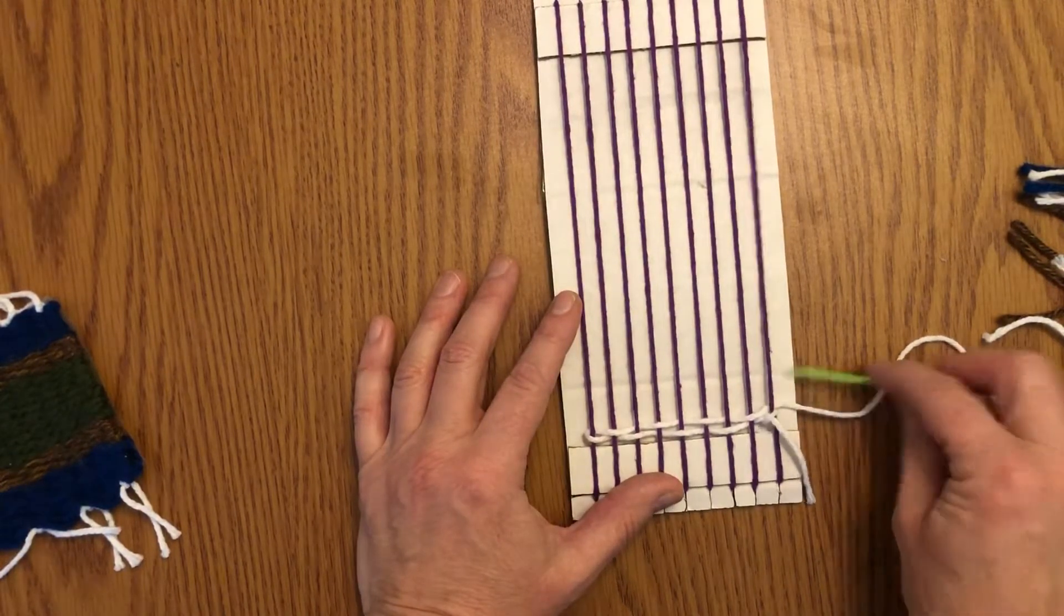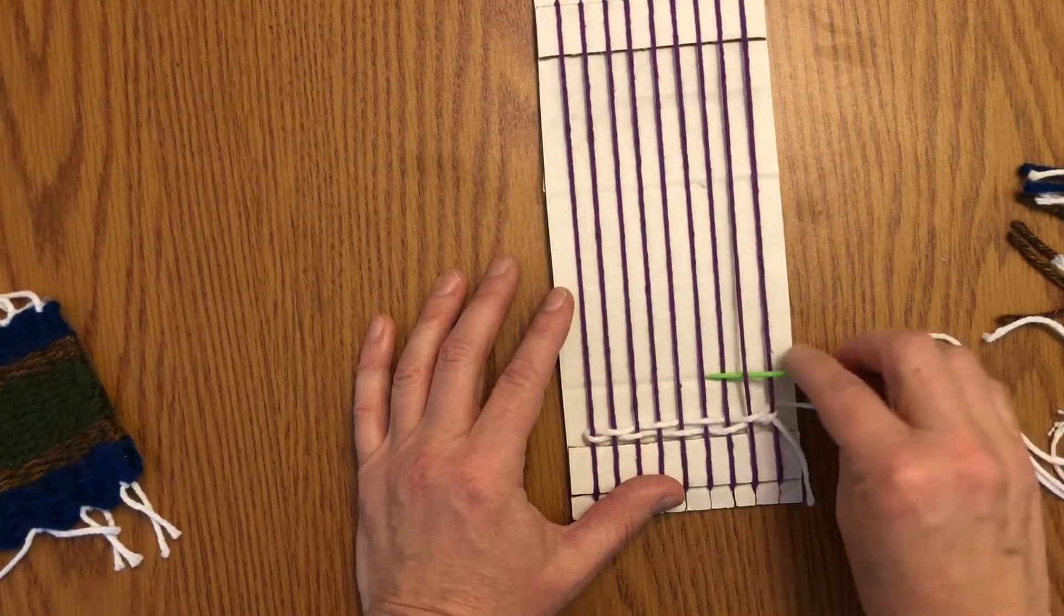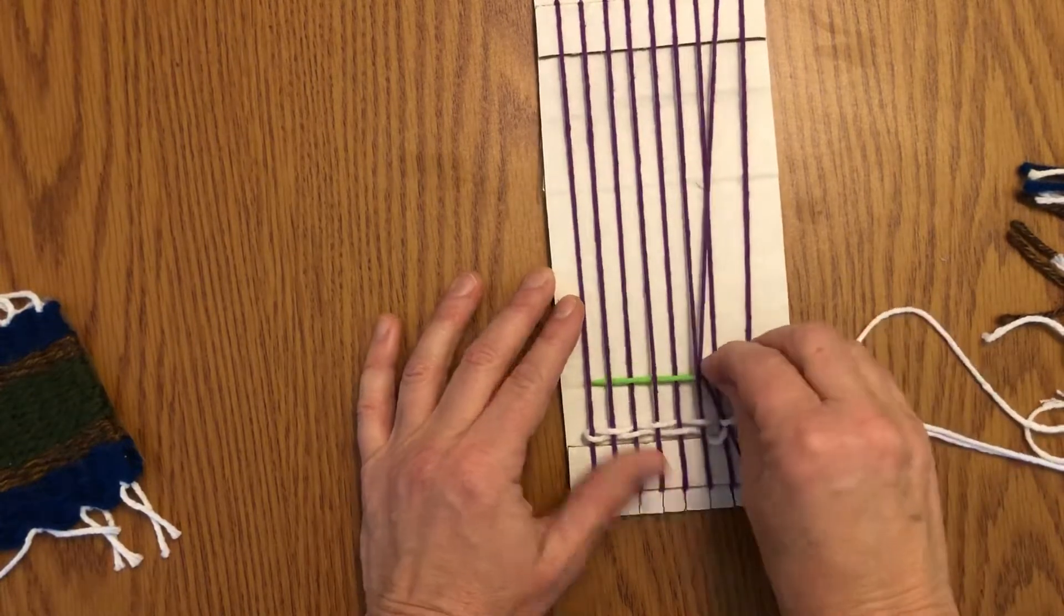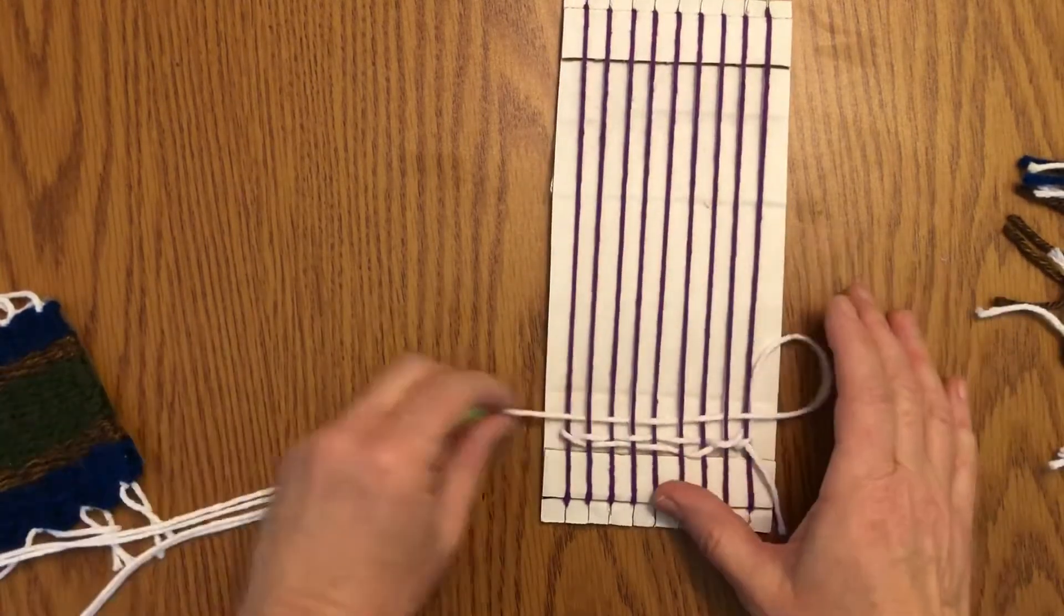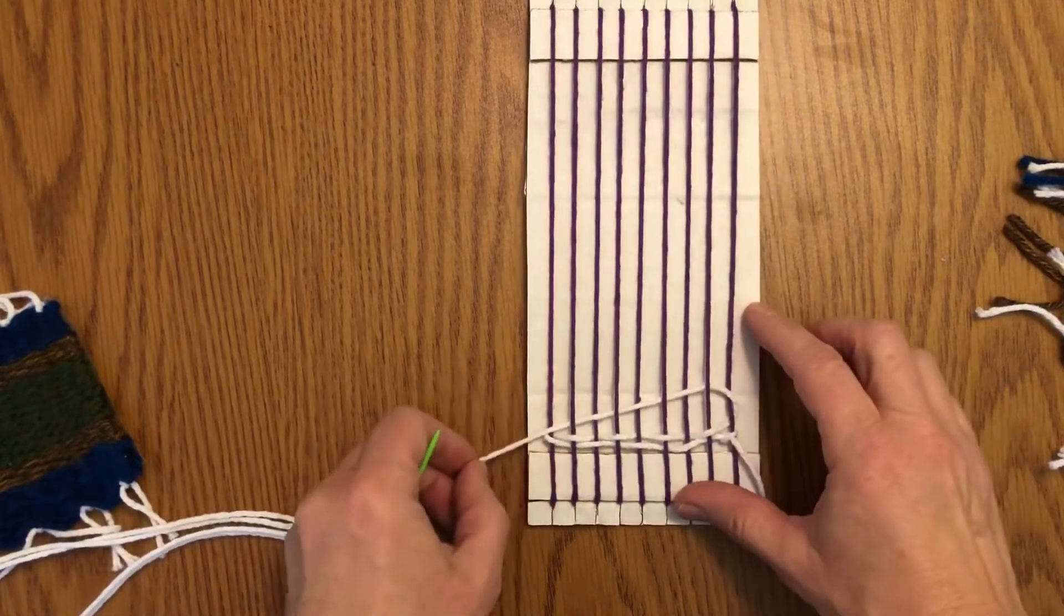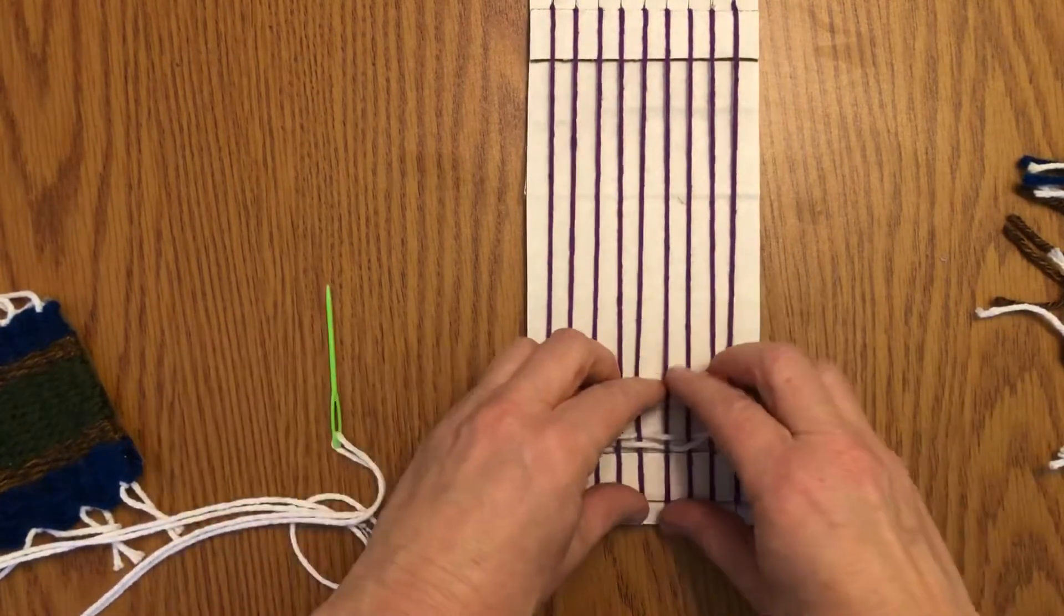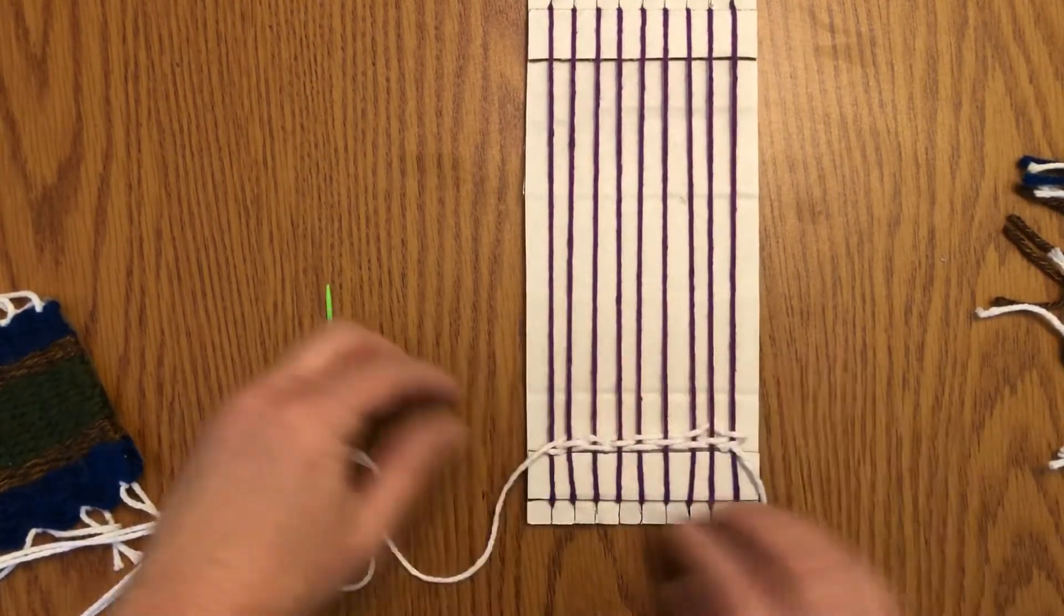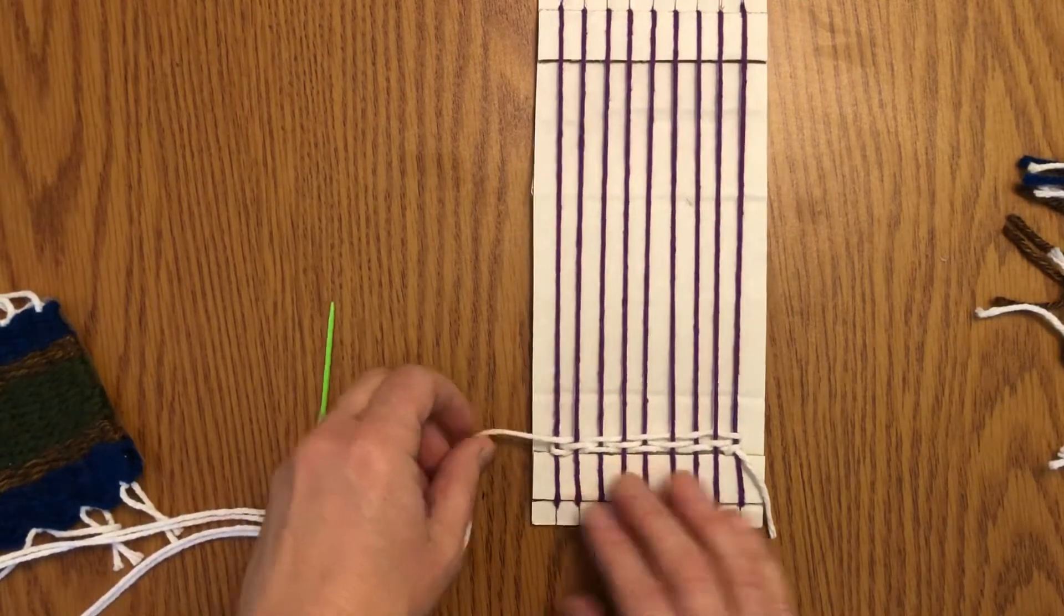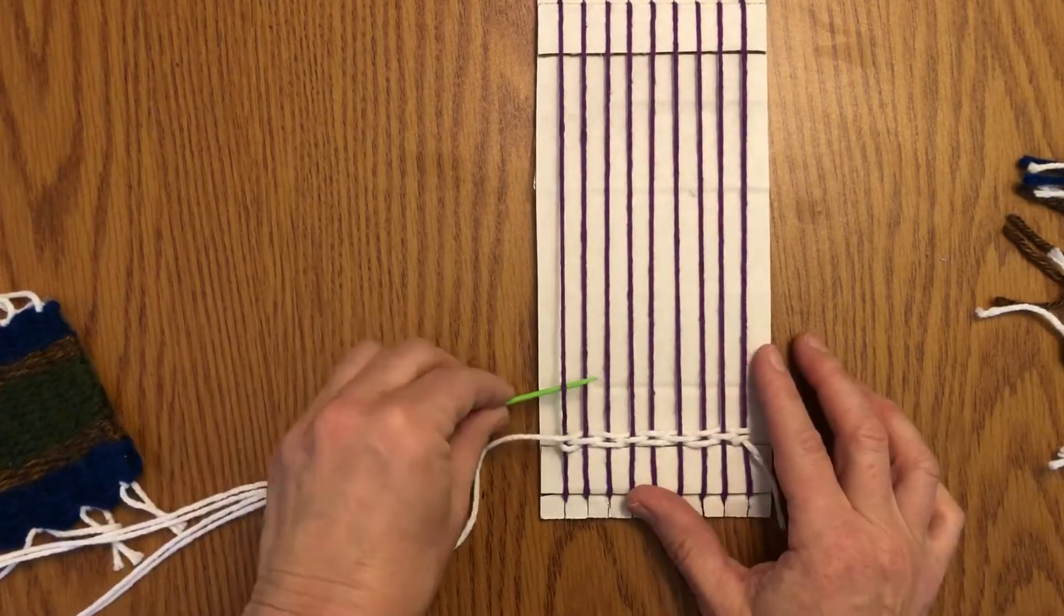I would just keep doing that and do the opposite each time. Here I finished by going under this warp thread, so I'm going to go over going back. Pull until I get that bubble, push it down, and I can tighten it a little. I can just keep going.